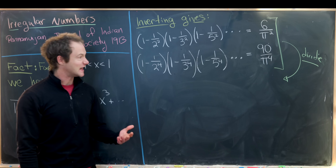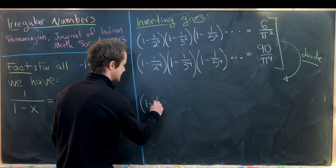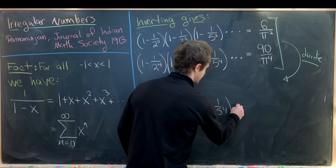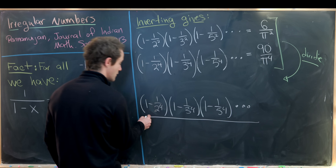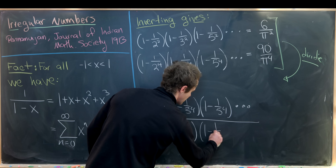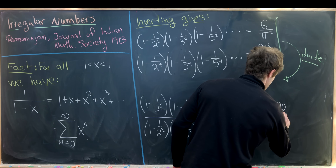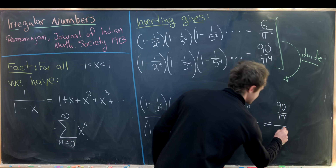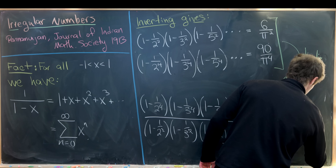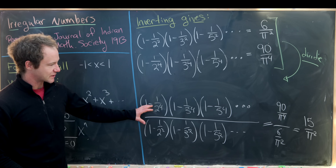We'll take the second line and divide it by the first. So we have the product of 1 minus 1 over 2 to the 4th, times 1 minus 1 over 3 to the 4th, times 1 minus 1 over 5 to the 4th, and so on, divided by the product of 1 minus 1 over 2 squared, times 1 minus 1 over 3 squared, times 1 minus 1 over 5 squared, and so on. The numerator gives us 90 over pi to the 4th, and the denominator gives us 6 over pi squared. That simplifies down to 15 over pi squared.